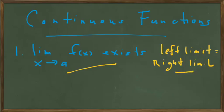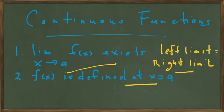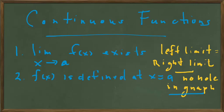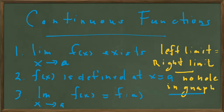The second part of the definition of continuity: the function must be defined at the x value of a where we want it to be continuous. Informally, that means there is not a hole in the graph at x equals a. The third requirement is that the common value from the left and right limits must equal the value where the function is defined.